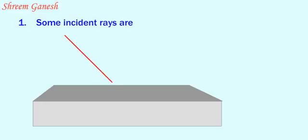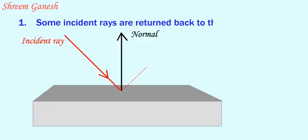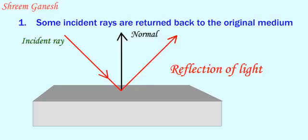Some incident rays are returned back to the original medium. This event is known as reflection of light. The rays returning back to the original medium are known as reflected rays.